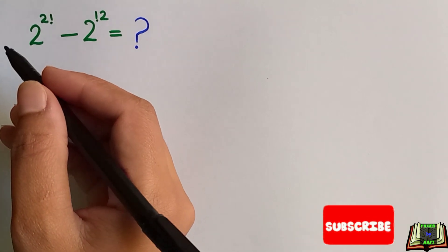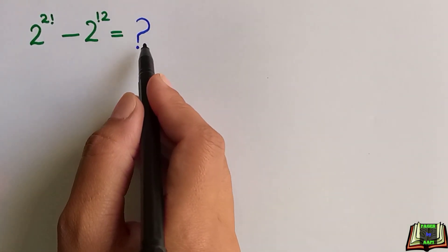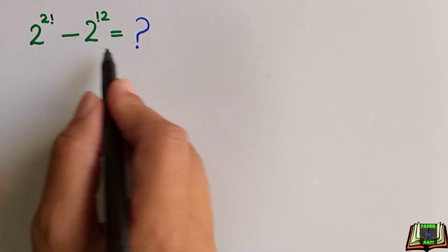Let's see the question: 2 to the power 2 factorial minus 2 to the power subfactorial of 2. We have to find the value of it.